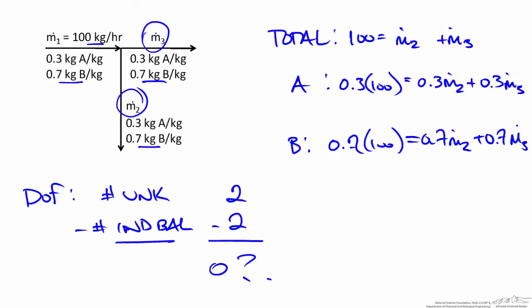For example, in balance A we have a common 0.3 in each term, so we can divide by 0.3. Similarly in balance B we can divide by 0.7. This shows that we have three versions of the exact same equation. All three balances are now showing 100 equals M2 plus M3.